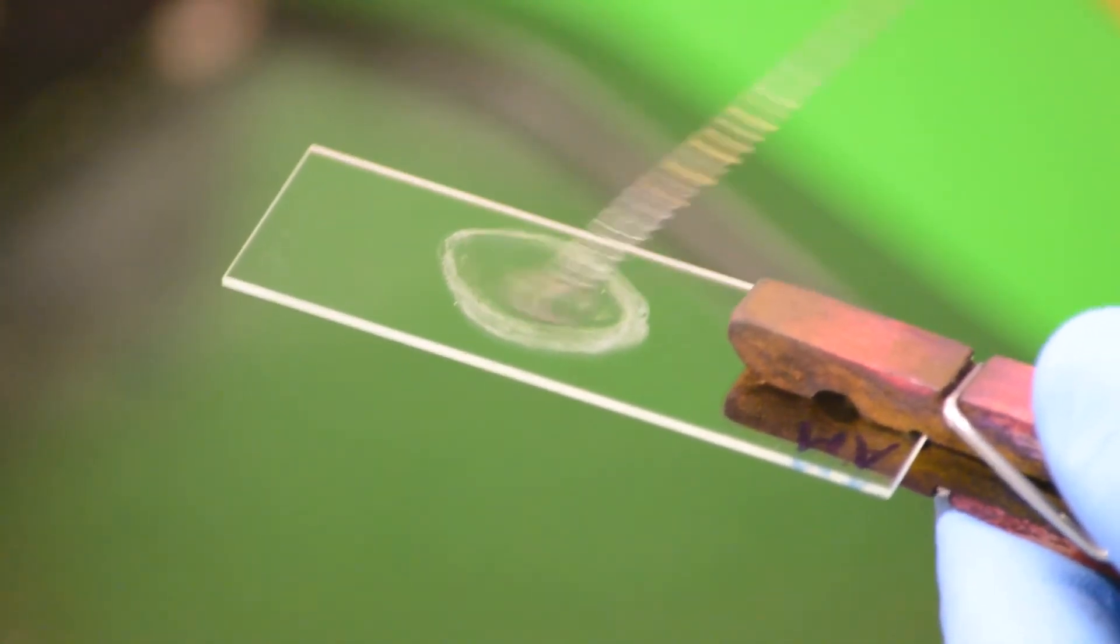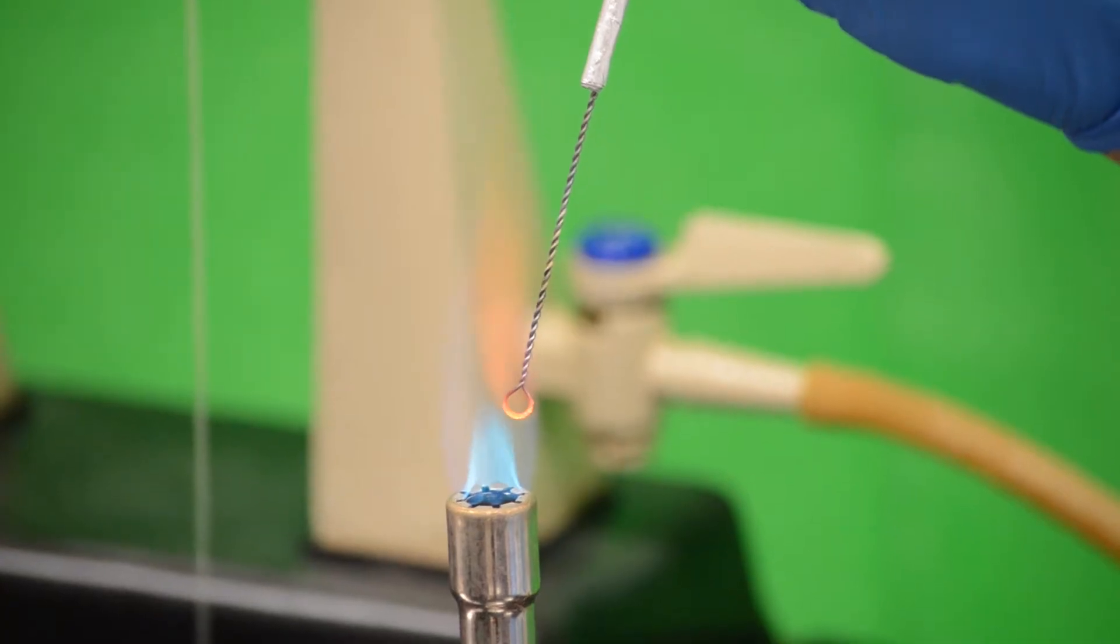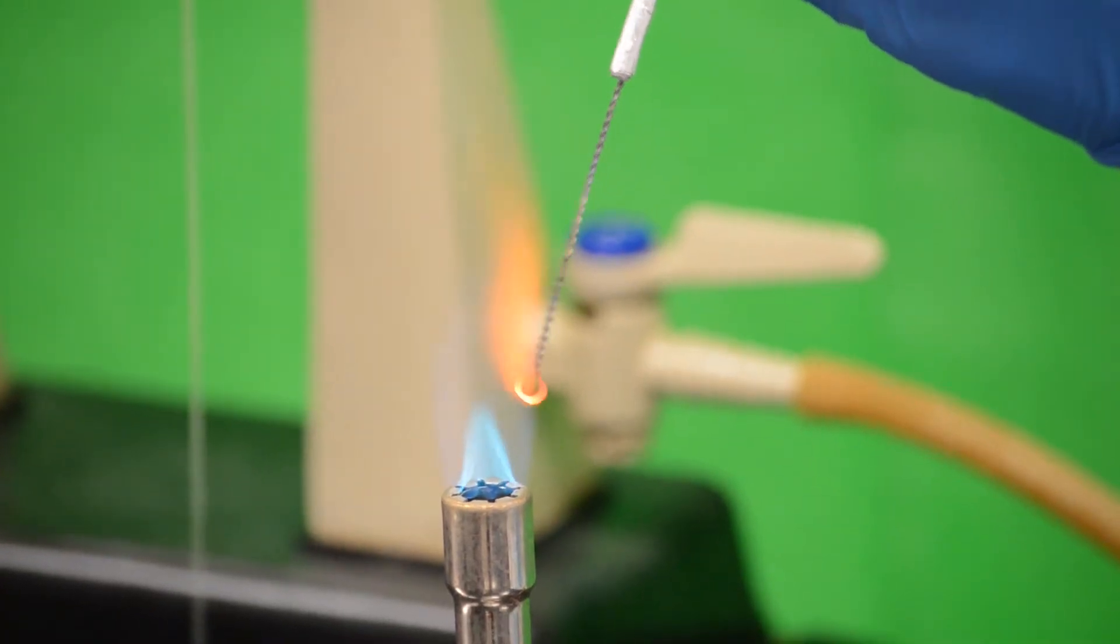Then flame the loop to sterilize it before you set it aside. Let the broth you spread on the slide air dry.